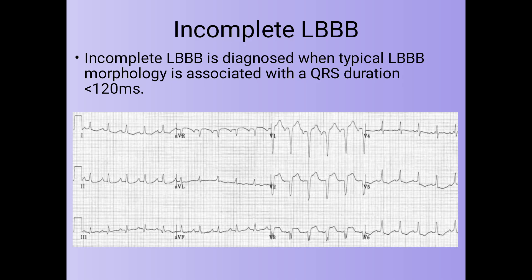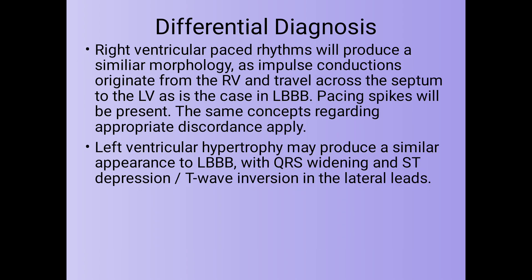Incomplete LBBB is when the QRS duration is less than 120 milliseconds. The differential diagnosis of LBBB includes right ventricular paced rhythm, which produces similar morphology as the impulse originates from the right ventricle and travels across the septum to the left ventricle, as in LBBB — pacing spikes will be present and the same concept regarding appropriate discordance also applies. Left ventricular hypertrophy may also produce a similar appearance to LBBB with QRS widening and ST depression or T wave inversion in the lateral leads.